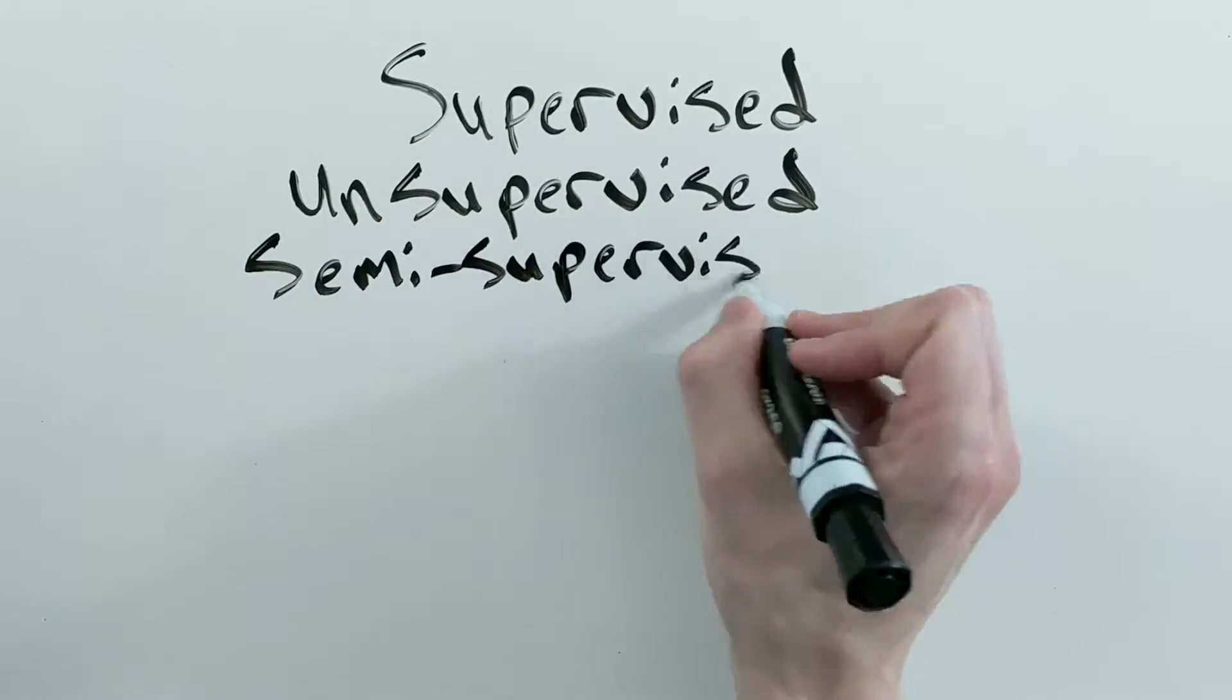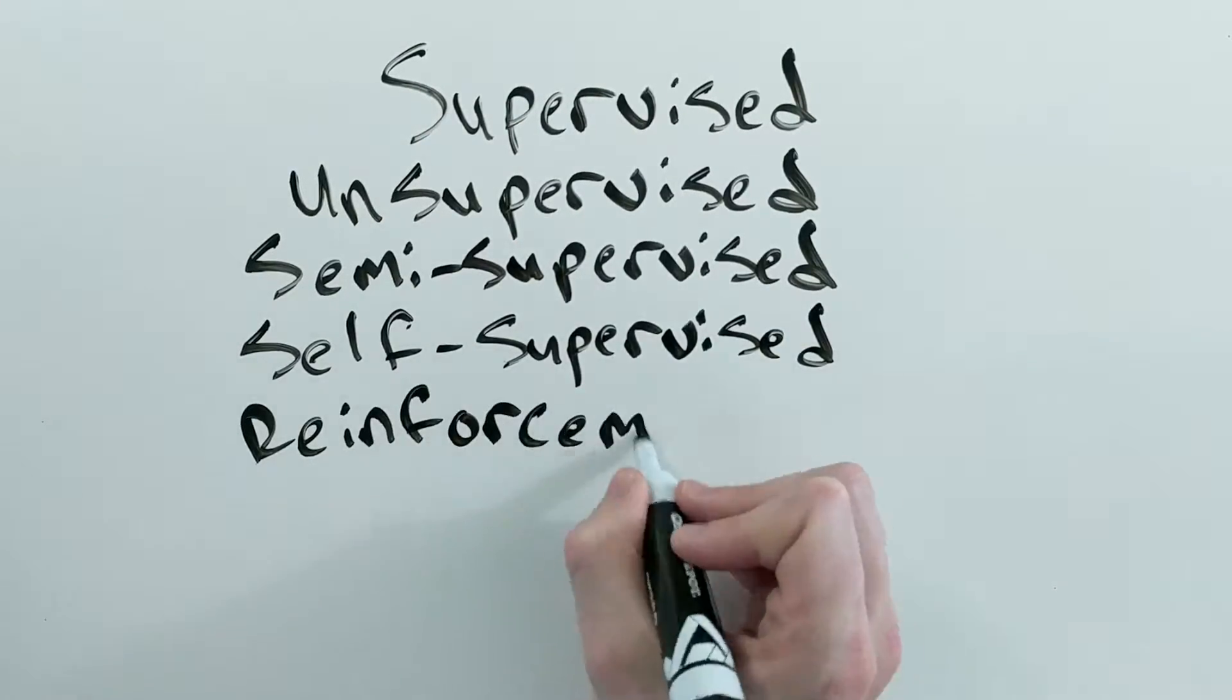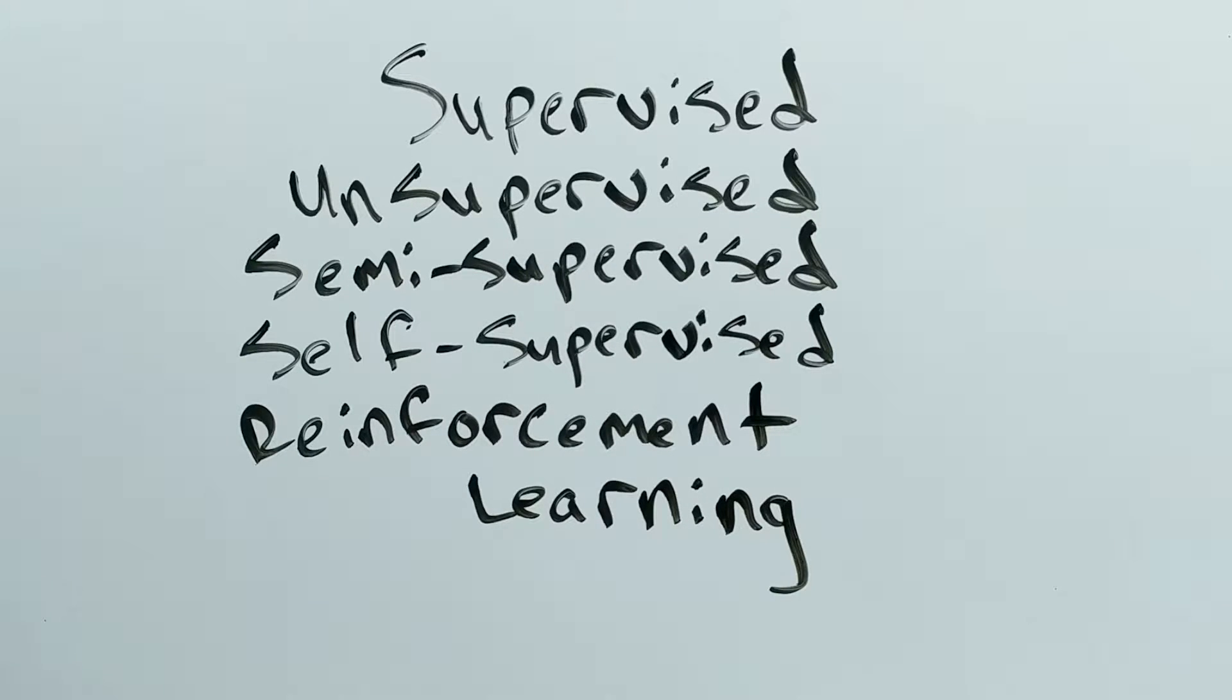Supervised, unsupervised, semi-supervised, self-supervised, and reinforcement learning are all different ways of learning from data to tackle problems.